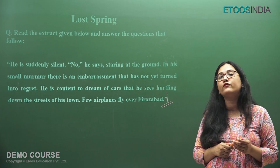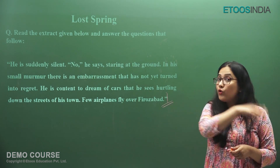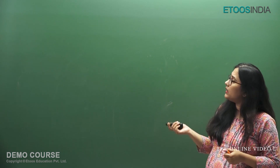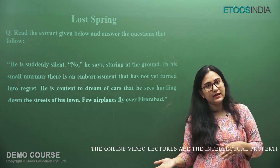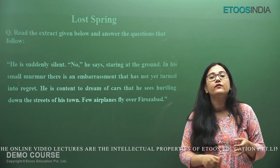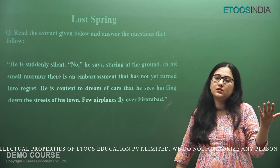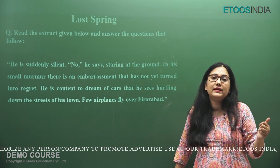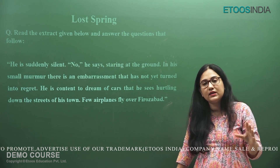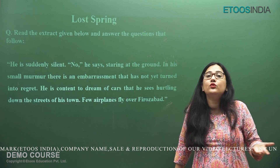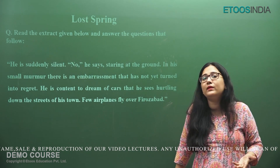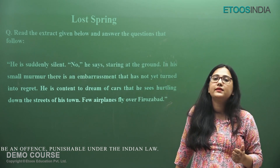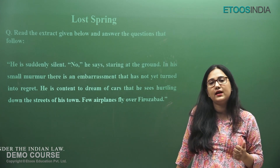They could ask you in MCQ: 'Few airplanes fly over Ferozabad — what is meant by this sentence?' You need to understand it both literally and symbolically. What we have done today is exactly what we did in the last class for The Last Lesson — discussing general questions and looking at excerpts that can be converted into MCQs. Just keep reading, keep revising, take down notes, and take interest in the stories. You will remember details easily without making a concerted effort. See you in the next class with questions from another story. Take care and stay safe.